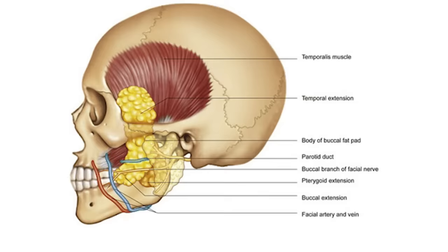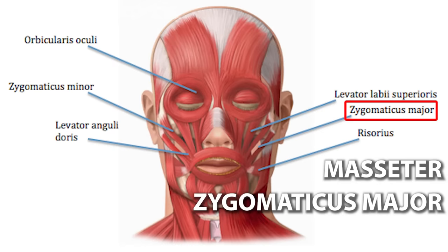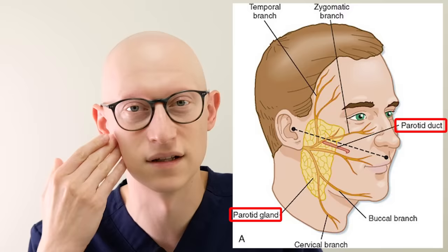The buccal fat is a deep fat pad located on either side of the face. It sits between the buccinator muscle — the muscle on the inner part of the cheek — and several more superficial muscles such as the masseter, zygomaticus major, and zygomaticus minor. The buccal fat pad is intricately intertwined with the parotid duct, which connects the parotid gland to the inside of the mouth and sends saliva in.